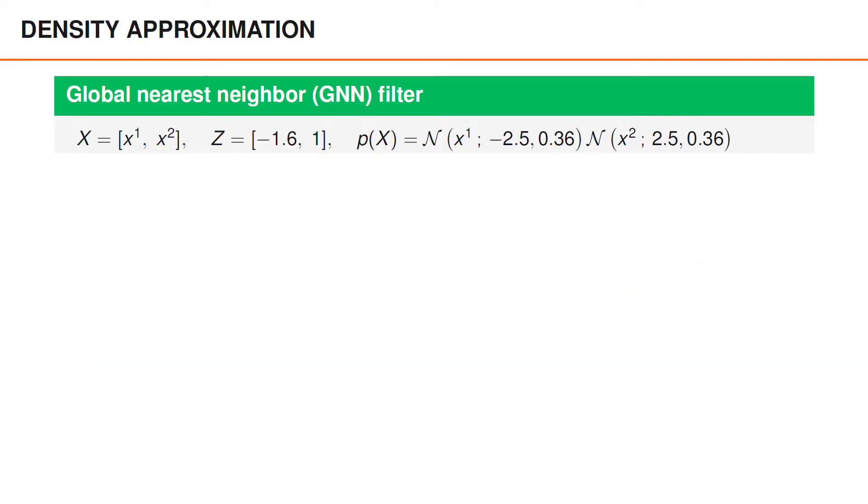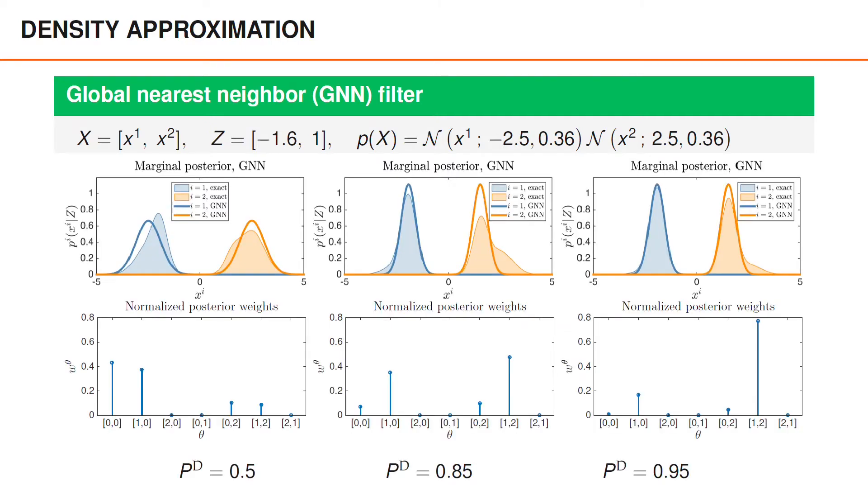We can have a look at the posterior density approximation for an example with two objects, two measurements equal to minus 1.6 and 1, and a Gaussian prior. You might recognize that we have used this example previously to illustrate the measurement likelihood and the posterior density. Here, the exact marginal posterior is shown together with a GNN approximation for three different values for the probability of detection.